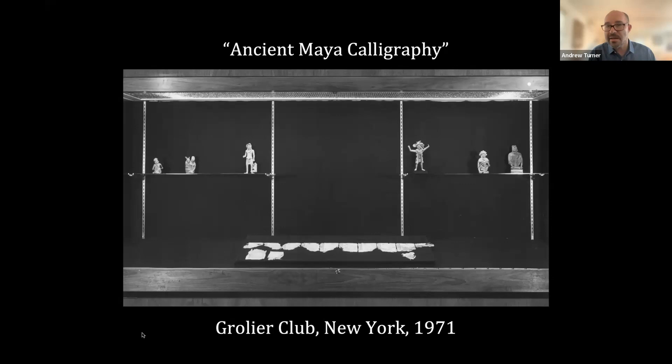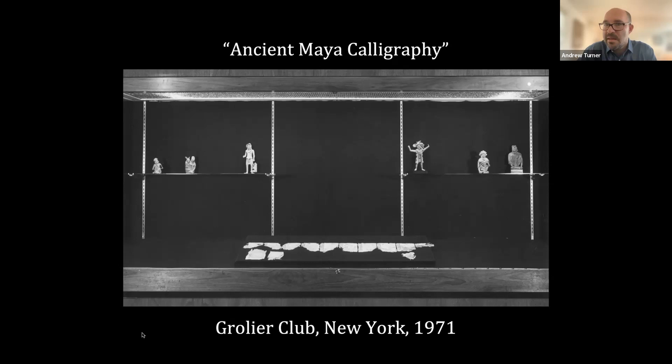Then in 1971, another codex happened to surface in a small exhibition in New York City called 'Ancient Maya Calligraphy,' curated by Michael Coe, a scholar at Yale. Michael Coe had heard that there was a codex in a private collection in Mexico City. He'd seen photos of it, and it was in New York in the process of being sold when he managed to get it for the exhibition. Nobody had really seen this codex before — maybe just a handful of people — and suddenly a purported fourth codex showed up.